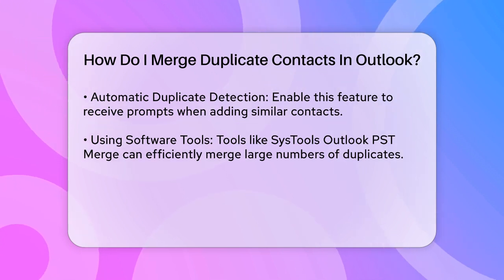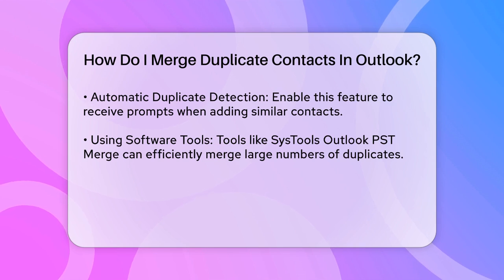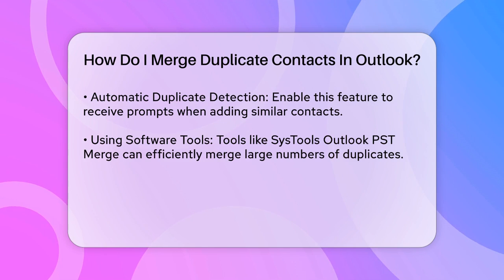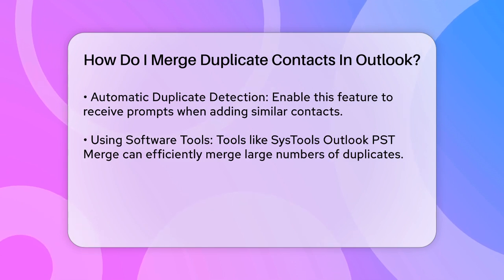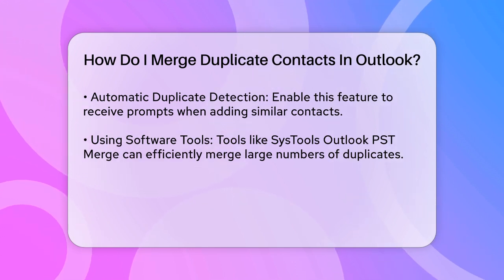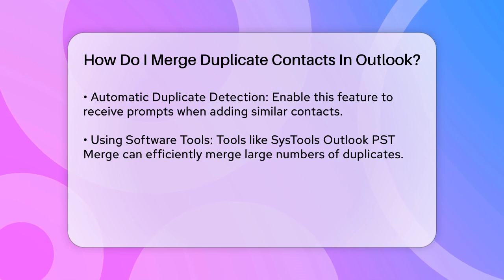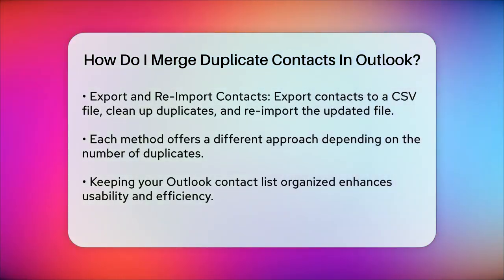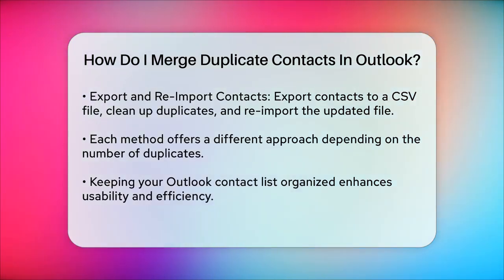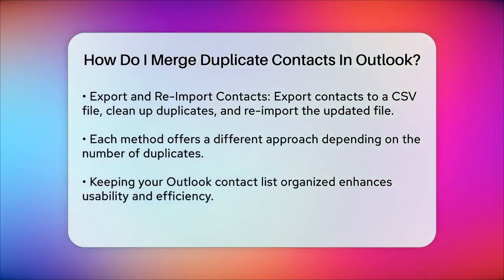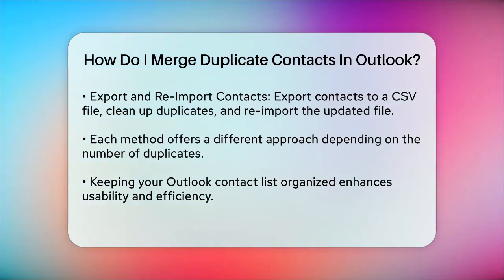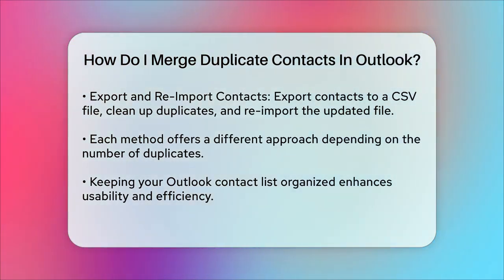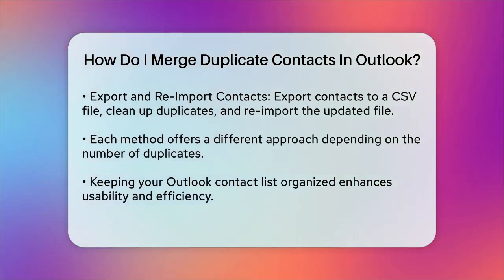If you have a large number of duplicates, using software like SysTools Outlook PST Merge can be very helpful. This tool allows you to merge contacts efficiently without any fear of data loss. You simply download and run the software, add the PST file or folder with the duplicate contacts, select the Merge tab, and choose to merge the contacts into a new file, existing file, or directly into Outlook. Make sure to select Contacts and tick the Skip Duplicate Items checkbox before saving.